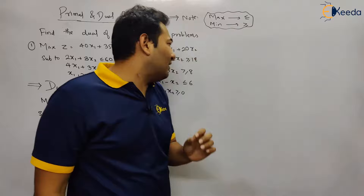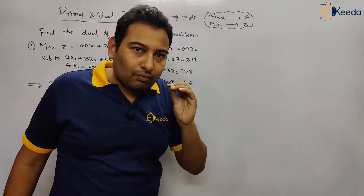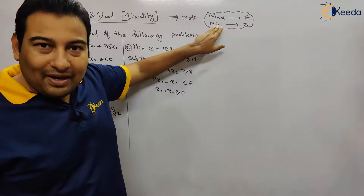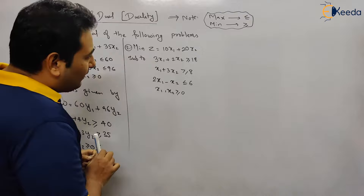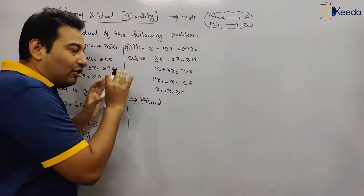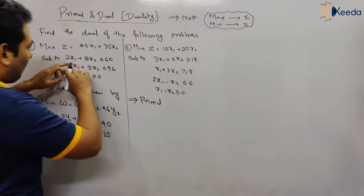For problem 2, whatever problem is given is our primal. Let us check whether the primal is in the correct form or not. The condition: if it is minimized, all constraints should be greater than or equal to. The problem is minimized, and the first two constraints are greater than or equal to — but the third one is less than or equal to. Therefore, you need to change this primal first. Once your primal is ready, then you can convert it into dual. In problem 1, the primal was already correct, so we directly found its dual.